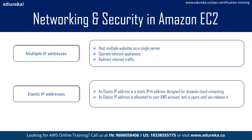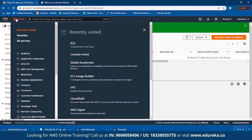The second feature is Elastic IP addresses. An Elastic IP address is a static IP address designed for dynamic cloud computing. It is allocated to your AWS account and is yours until you release it. Alternatively, you can specify the Elastic IP address in a DNS record for your domain so that your domain points to your instance.